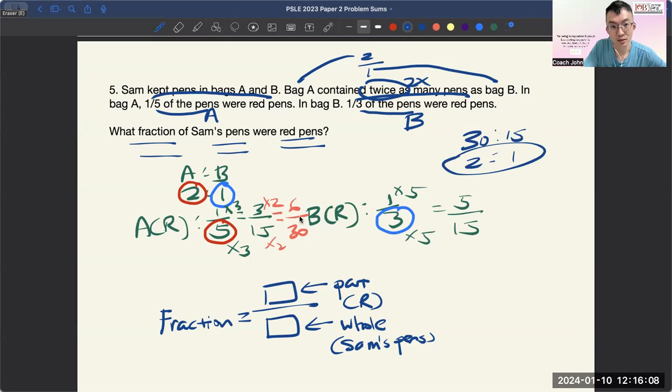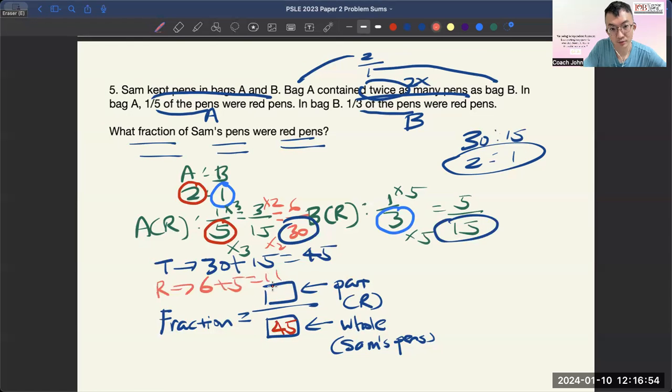So, story says 6 out of 30. So in bag A, 6 out of 30 of the pens in bag A are red. And for bag B, 5 out of 15 of the pens are red. So having said that, this will be the total units, and the total will be 30 units plus 15 units which is 45. And the red pens will be 6 units and 5 units. So, the total for red will be 6 plus 5 which is 11.